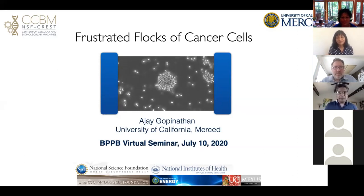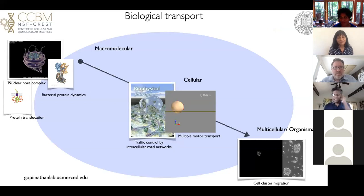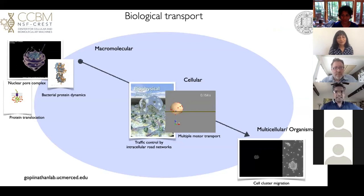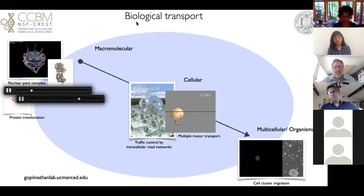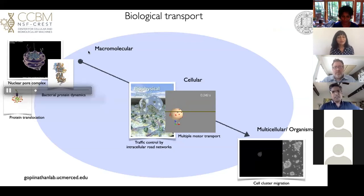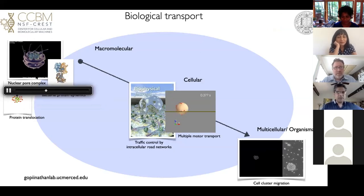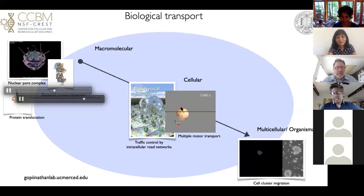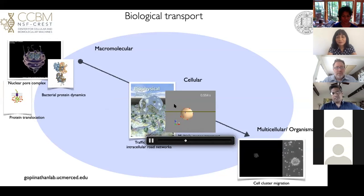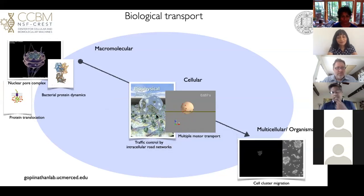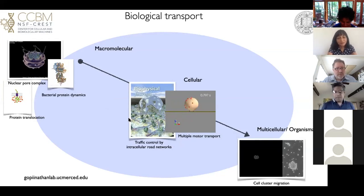Today I'm going to be talking about frustrated blocks of cancer cells, but just by way of introduction, we are a group that does theory and computation on a variety of topics broadly around biological transport. We look at things across scales from the molecules — looking at things like transport through the nuclear pore complex — to transport at the cellular scale by motor-driven transport on cytoskeletal networks, and at the much larger scale we look at multicellular systems.